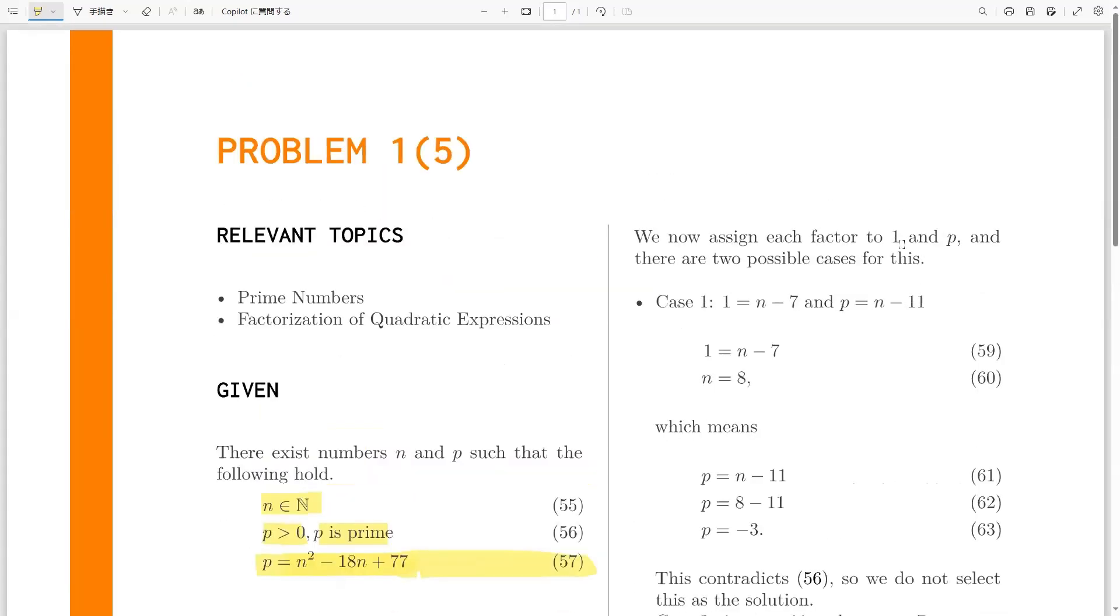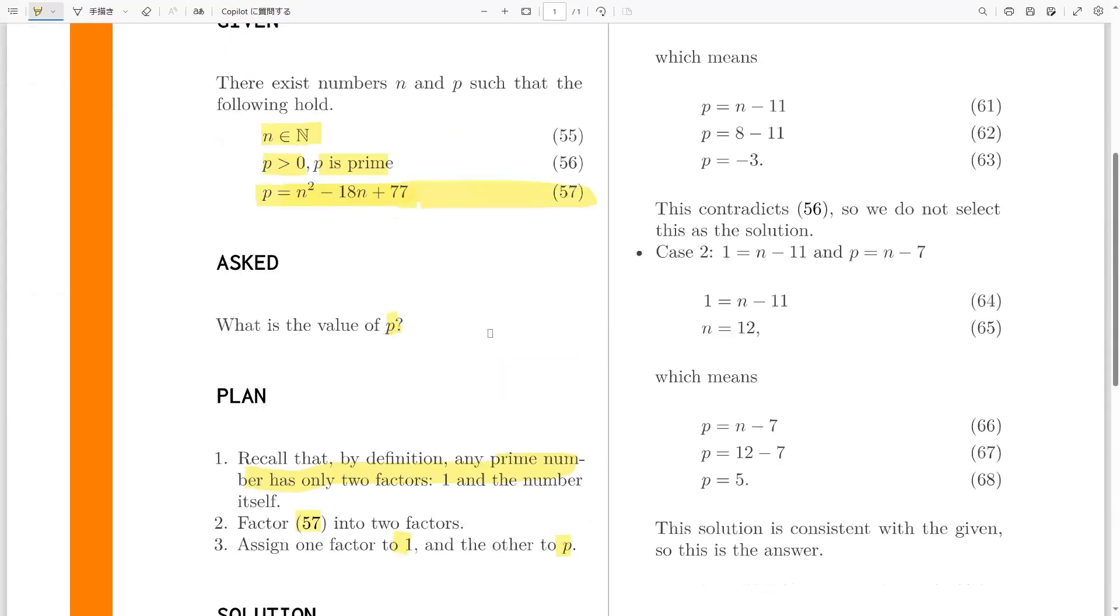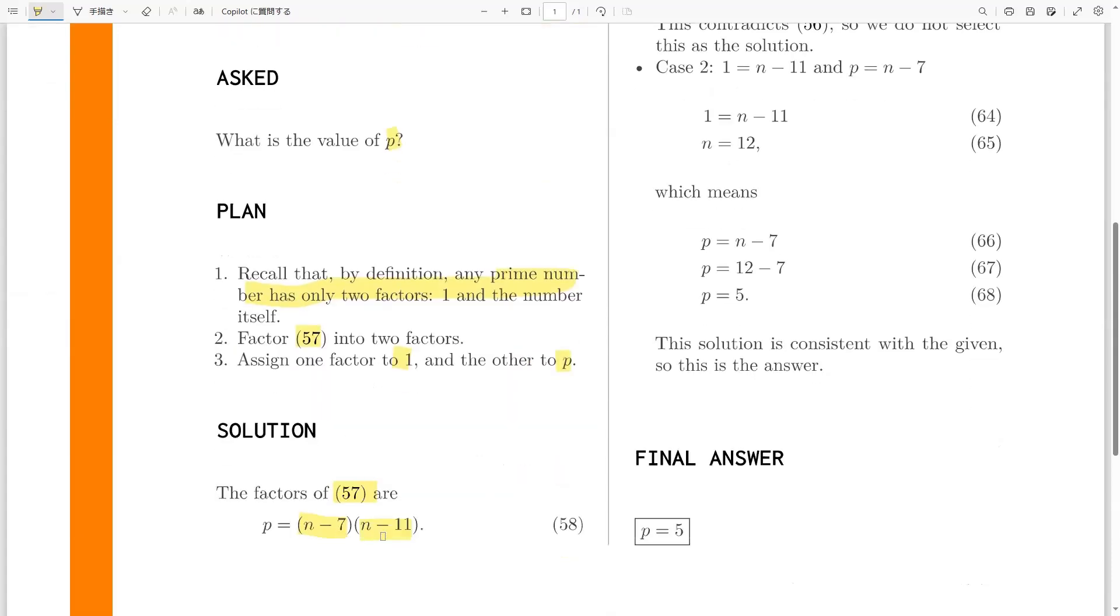And that is we assign the factors of p, which are 1 and p, to each of those factors of the right side, the right-hand side of 57. Those are n minus 7 and n minus 11. Now, because there are two factors of p, 1 and p, and there are two factors of this expression here,